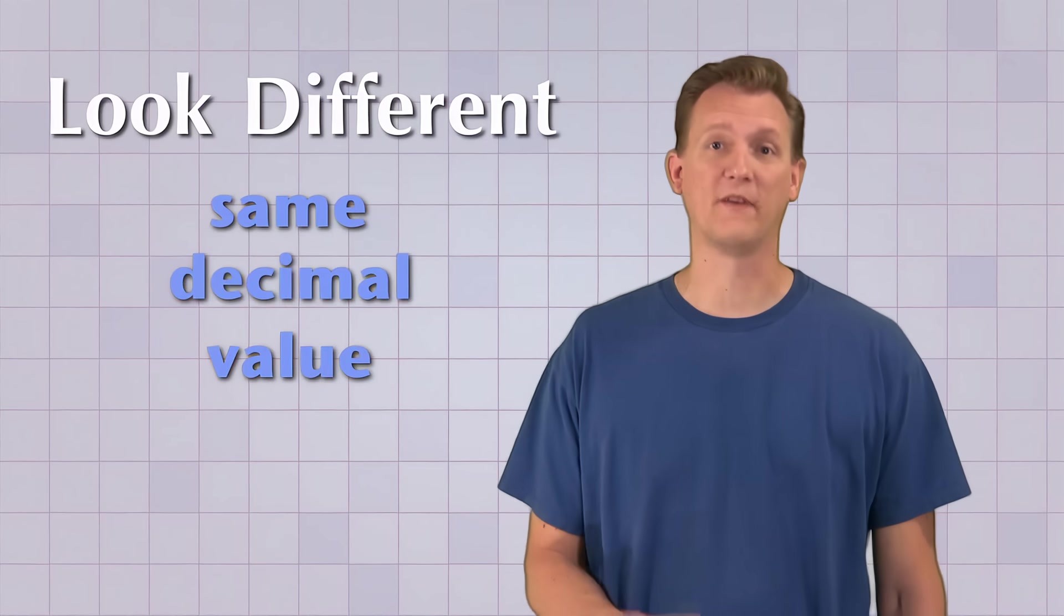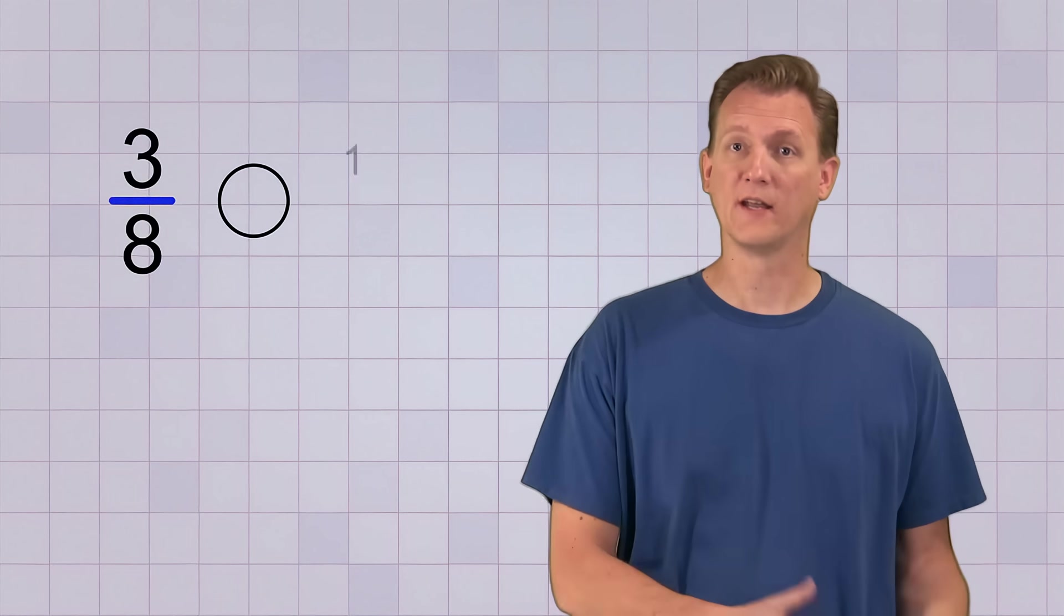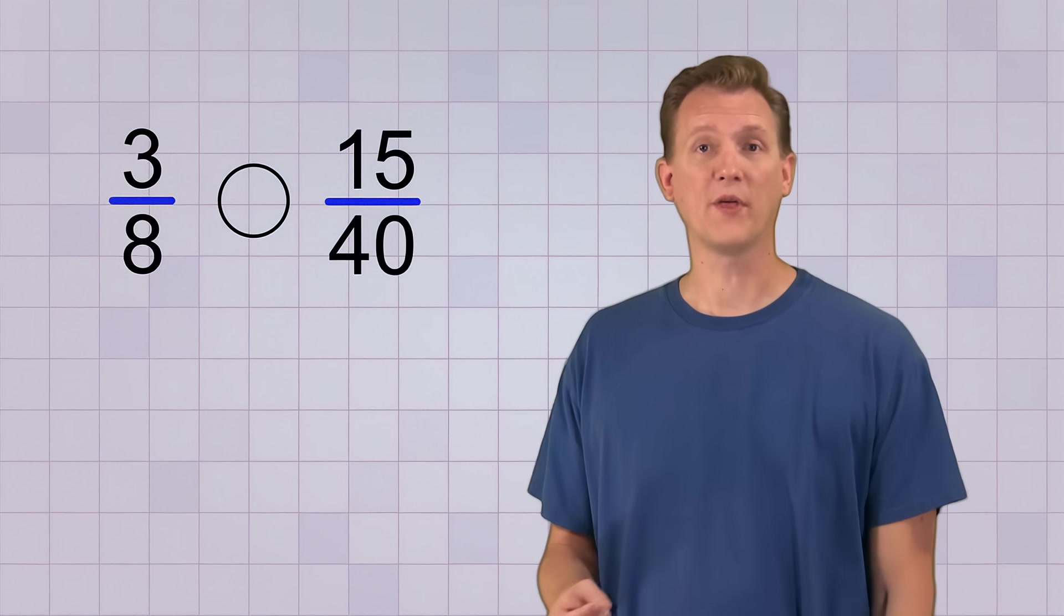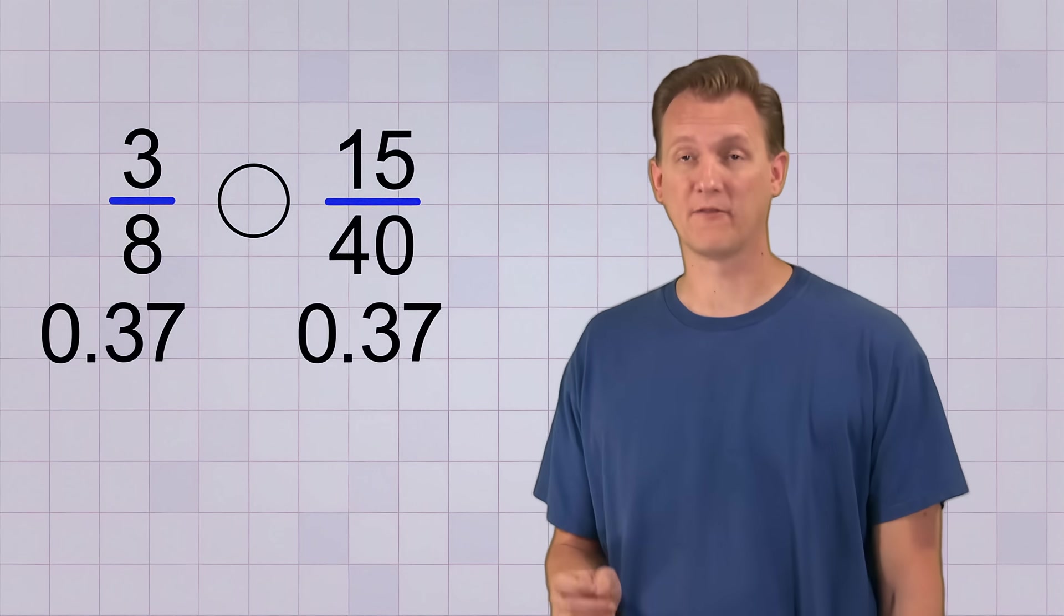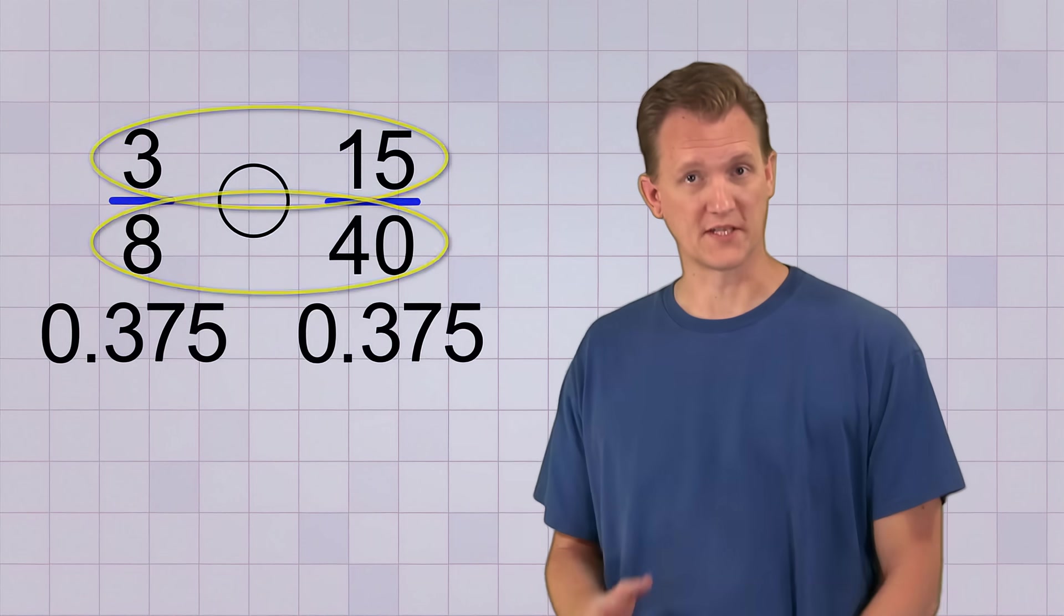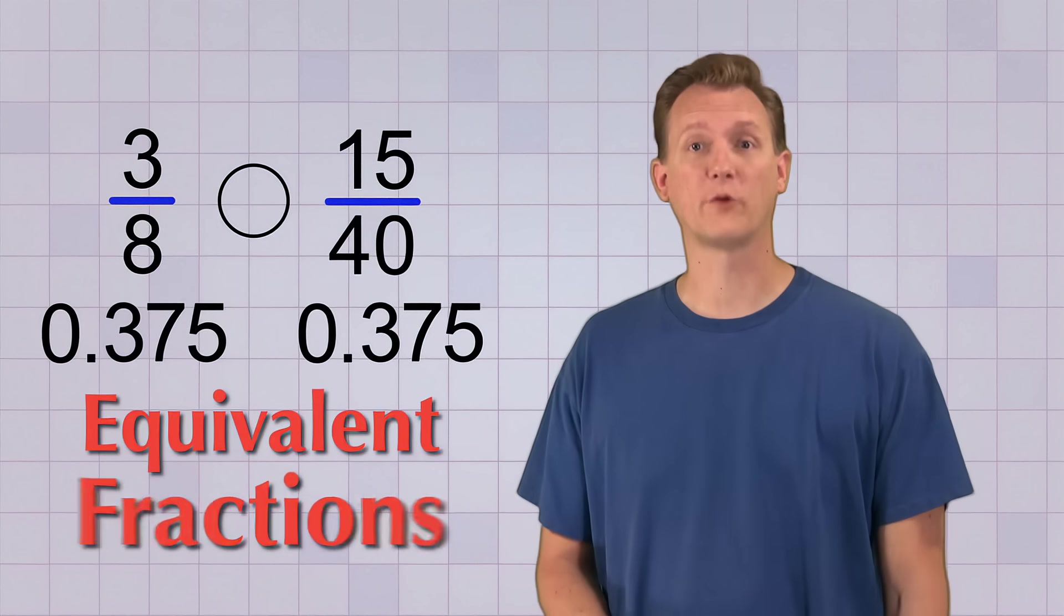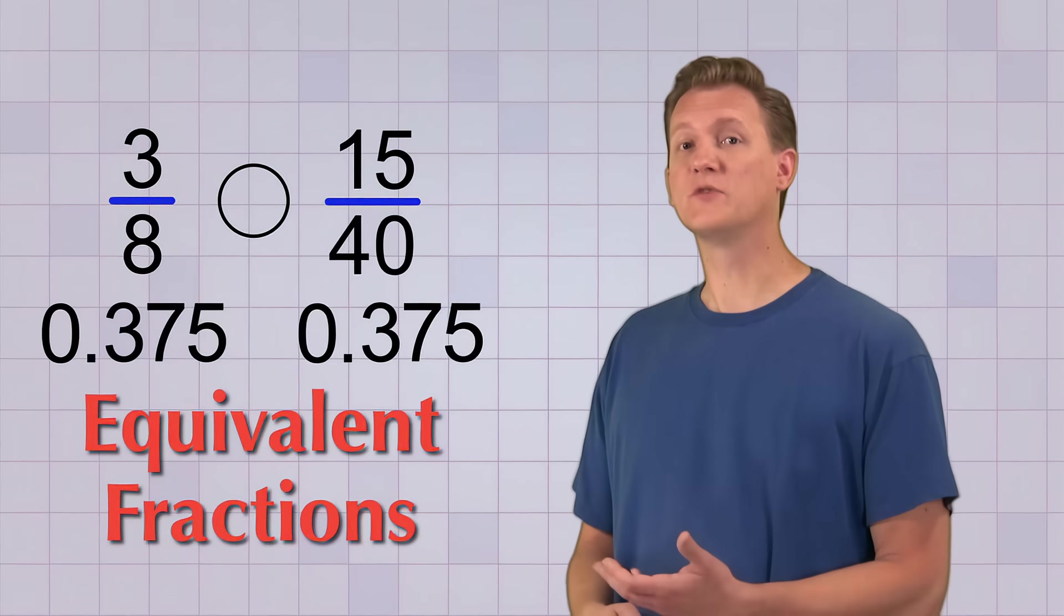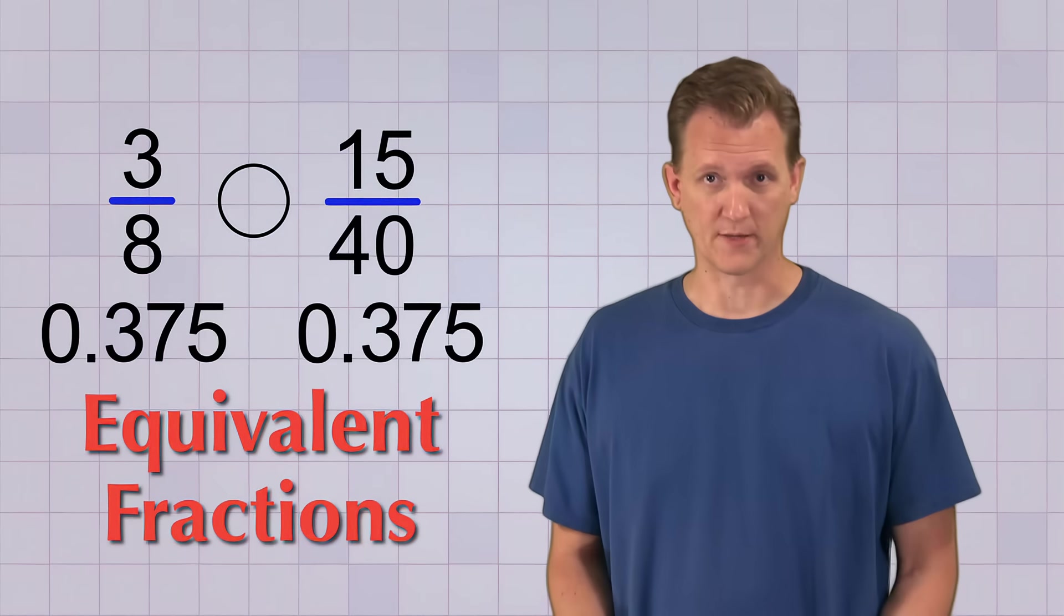Sometimes, when you compare fractions this way, you'll find two fractions that look different but have the same decimal value, like 3 over 8 and 15 over 40. If you convert each fraction to a decimal, you'll see that they both have the value 0.375. Two fractions that have different top and bottom numbers but the same value are called equivalent fractions. If two fractions are equivalent, then you can just use the equal sign to show the comparison between them, like this.